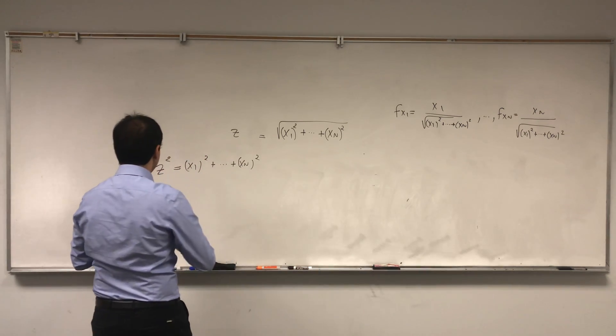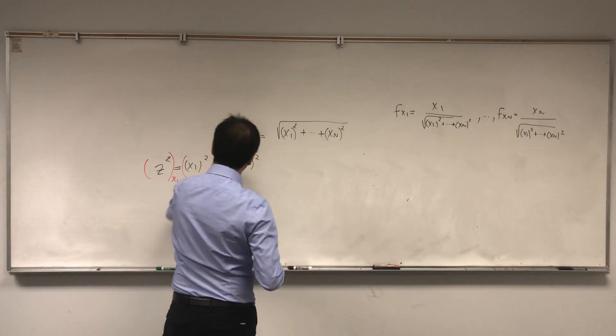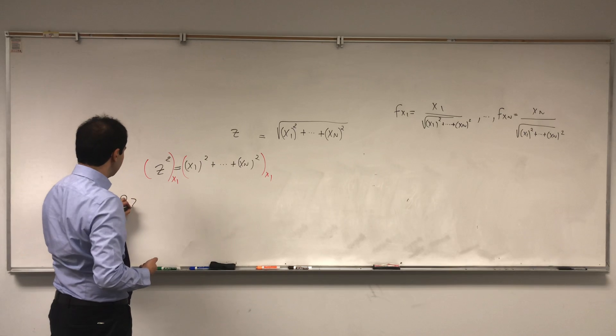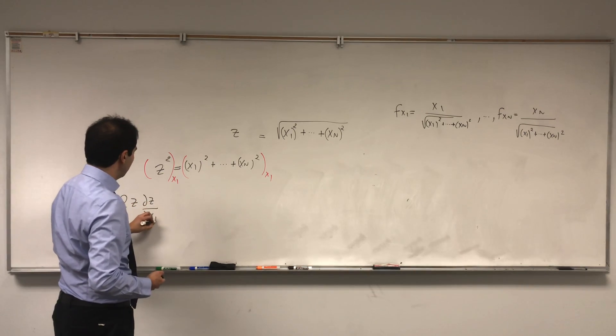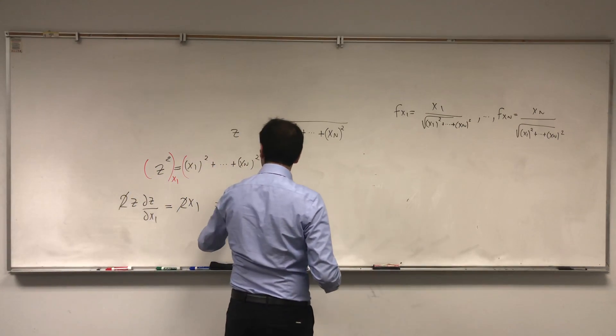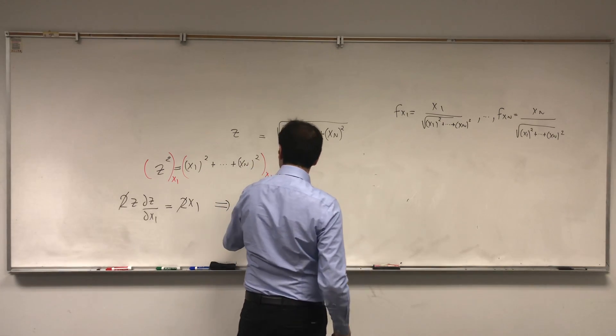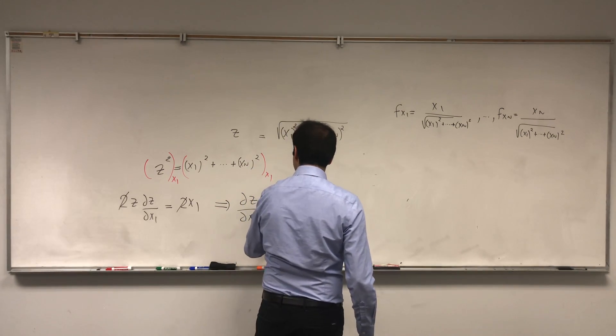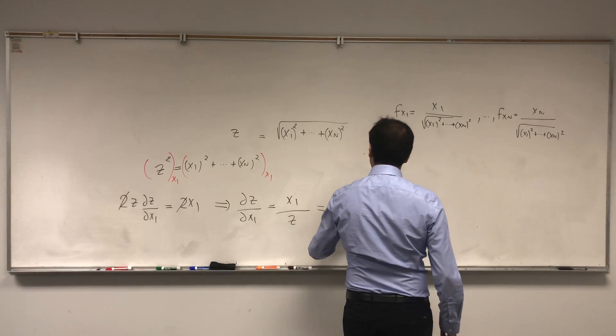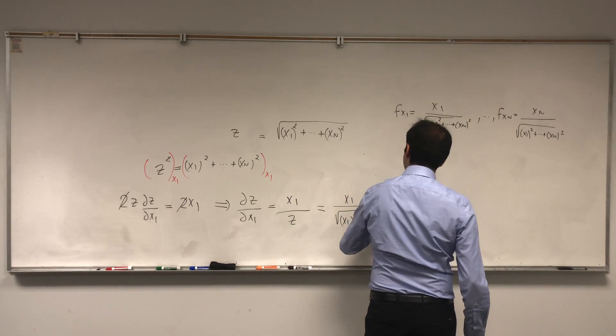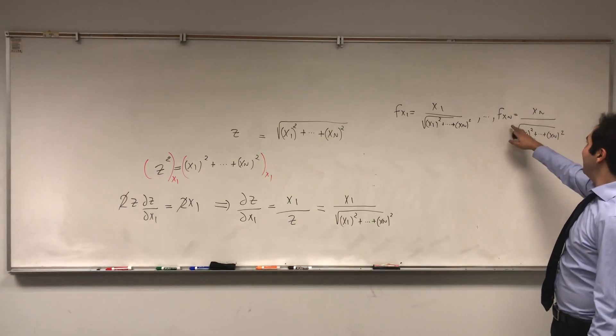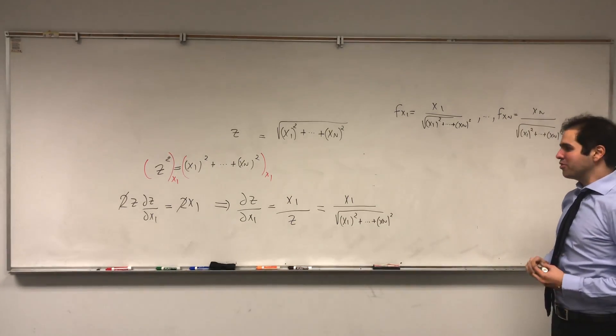So differentiate this with respect to x1. Then again, using the chain rule, you get 2z partial z over partial x1, that just becomes 2x1. This cancels out, which tells you partial z over partial x1, that's x1 over z. And z, I would like to remind you, is x1 over square root of x1 squared plus dot dot dot plus xn squared. And similarly with every other thing, zn would be xn over whatever square root you have.